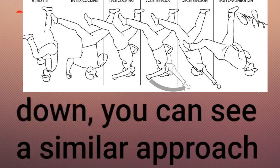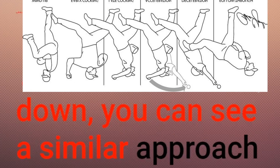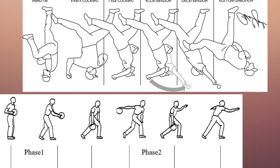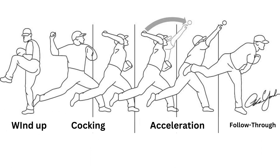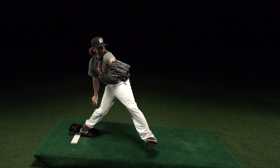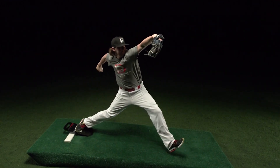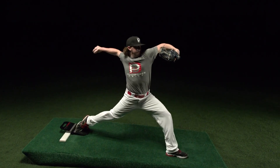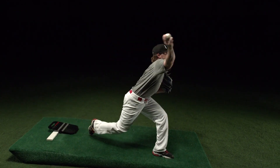If you turn this image upside down, you can see a similar approach of a bowler. The whole process can be simplified into 4 phases: the wind-up, the cocking, acceleration, and follow-through. The biomechanics of a baseball pitcher is similar to a bowler — we all want the ball to travel fast with tons of revolutions. Let's match these 4 sequences to the bowling approach.